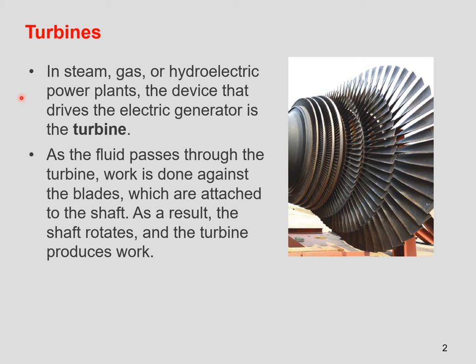Let's take a look at turbines. In steam, gas, or hydroelectric power plants, the device that drives the electric generator is known as the turbine. The turbine takes the mechanical energy of the steam and converts it into rotational motion that you can use to drive an electric generator. As the fluid passes through the turbine, work is done against the blades, which are attached to the shaft. As a result, the shaft rotates and the turbine produces work.